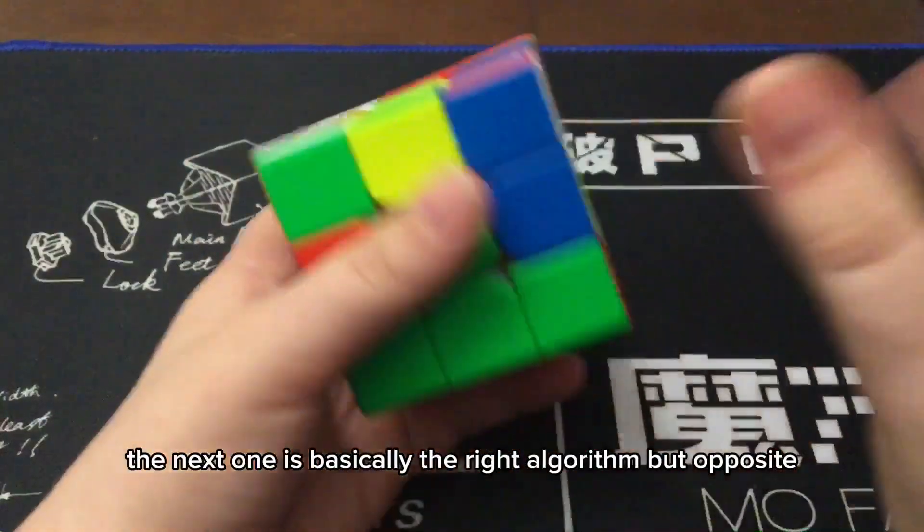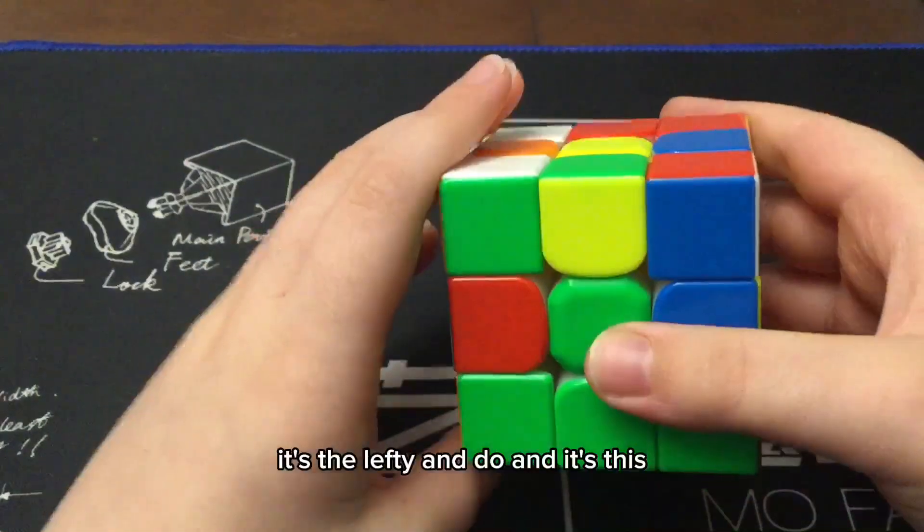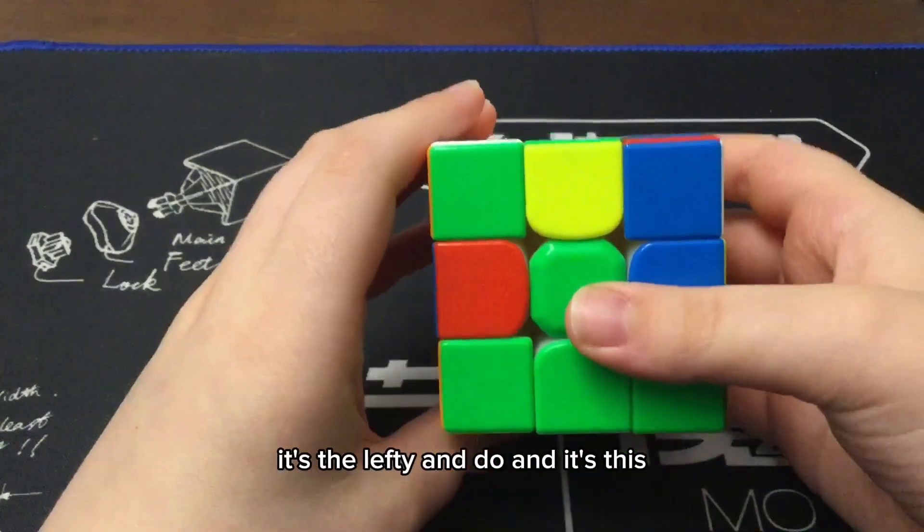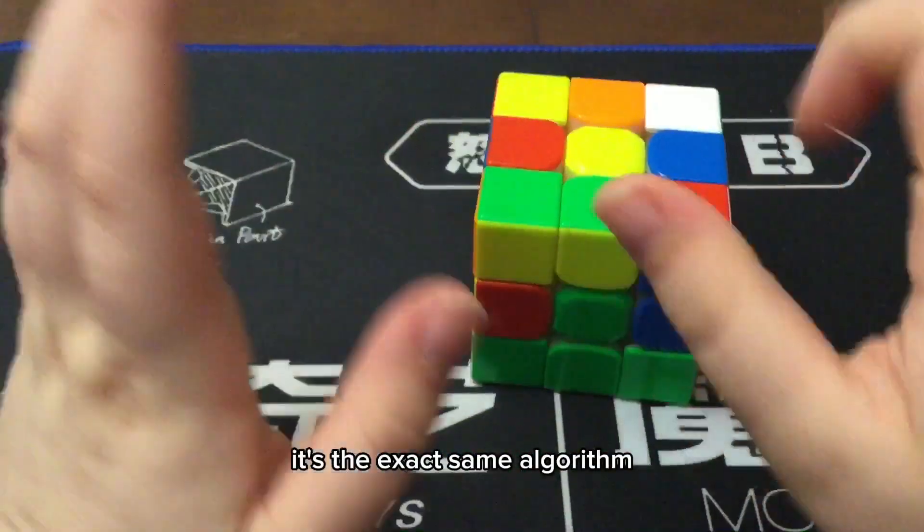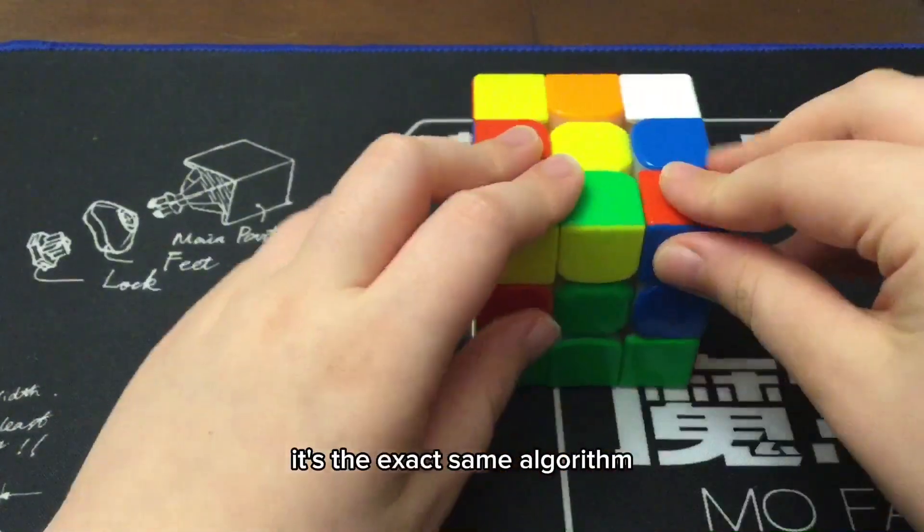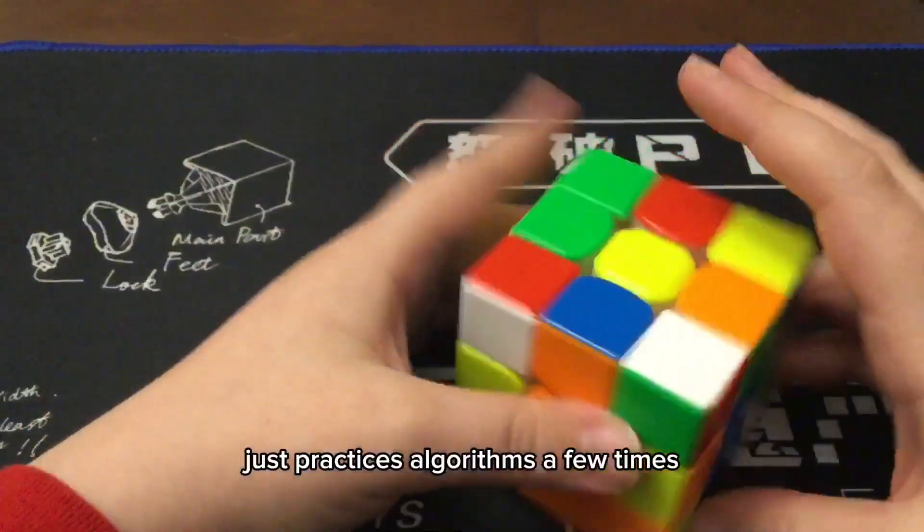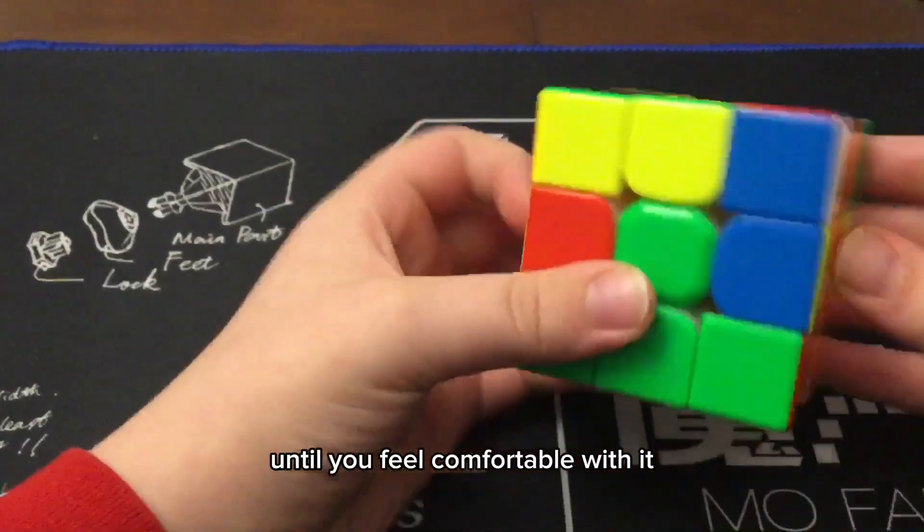The next one is basically the righty algorithm, but opposite, it's the lefty. It's the exact same algorithm. Just practice these algorithms a few times until you feel comfortable with it.